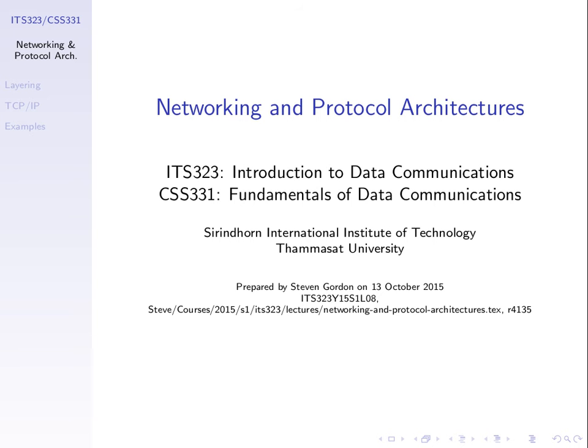We know some basics of getting data across one link. Now we want to look at what if I want to get data to some location that I don't have a direct link to. The common approach is having a link to one device, that device has a link to another, and we send data across a set of links or across a network. We want to look at the general concepts of how to get data across a network, how to find which links to send data via to reach the desired destination — routing — and some of the protocols to make that data delivery efficient.